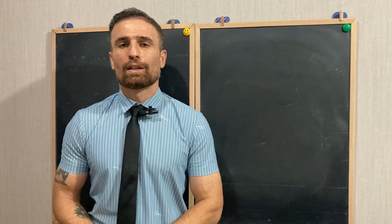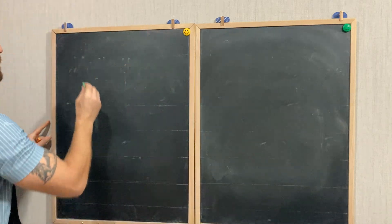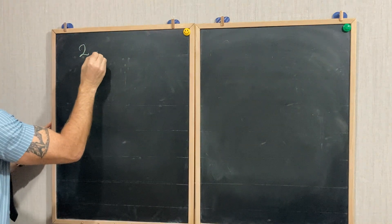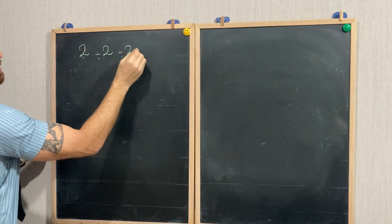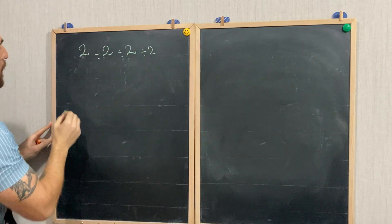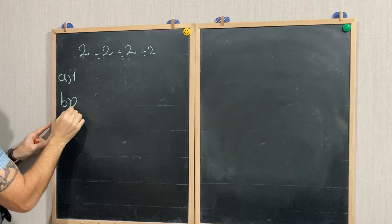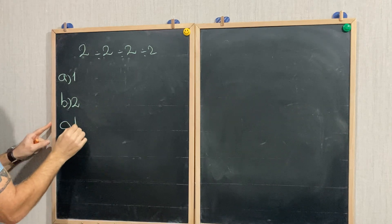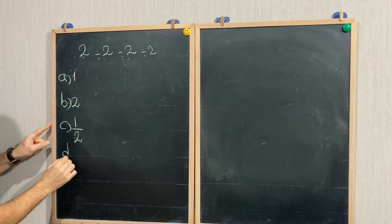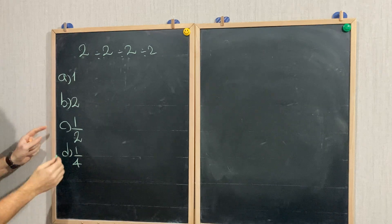So let me write the question. The question says find the value of 2 divided by 2 divided by 2 divided by 2, while option A is 1, option B is 2, option C is 1 over 2, and option D is 1 over 4.